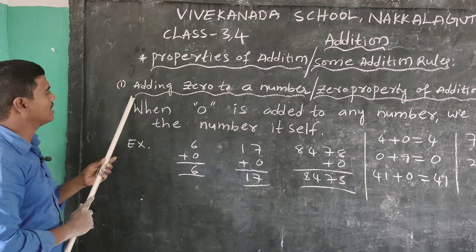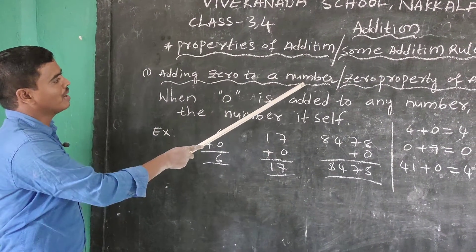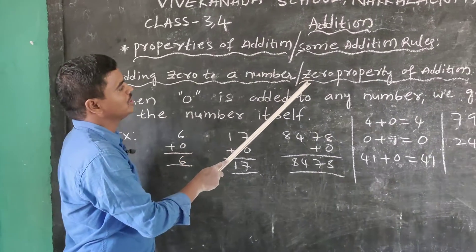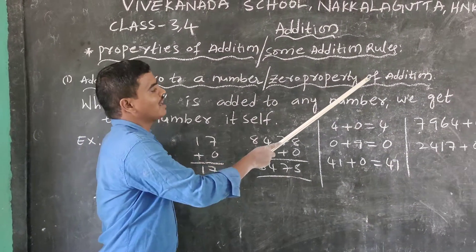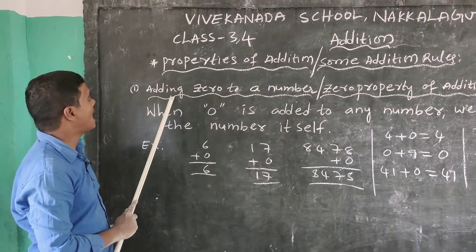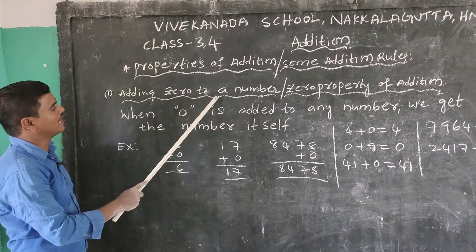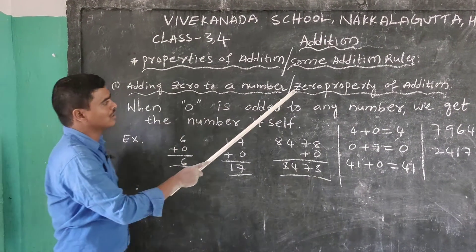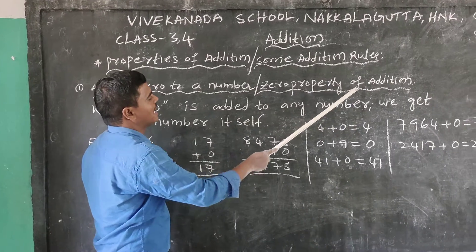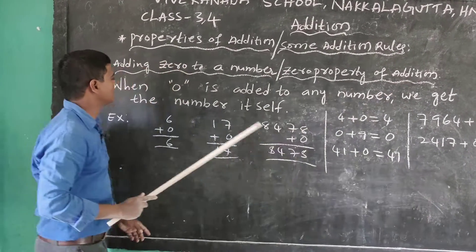The first property is: adding 0 to a number, also called the zero property of addition. Once again — adding 0 to a number, or the zero property of addition. Statement: